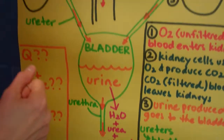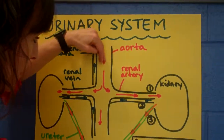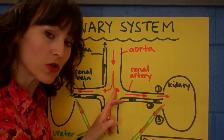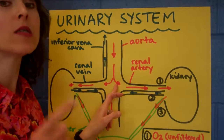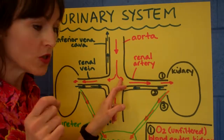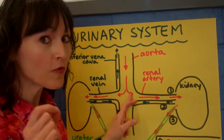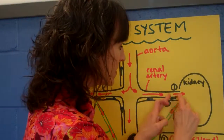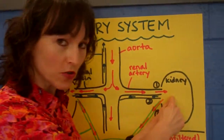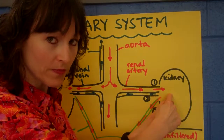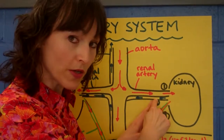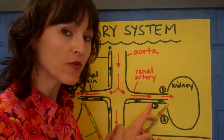The blood coming into the kidneys comes down the aorta. It's in red, so you've noticed that this is oxygenated blood — oxygenated, rich in oxygen, but not filtered yet. So this blood comes into the kidney. The kidney filters this blood. The blood coming out is now CO2 blood that has now been filtered.